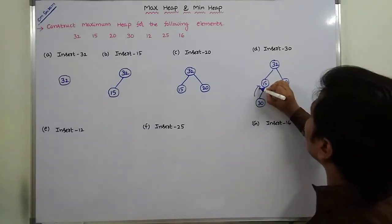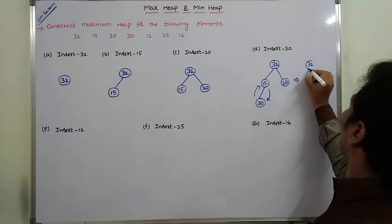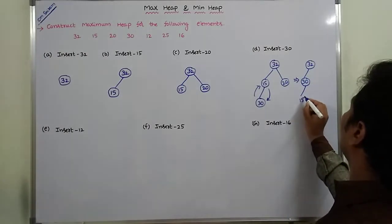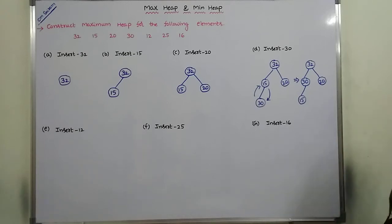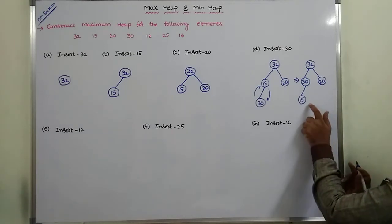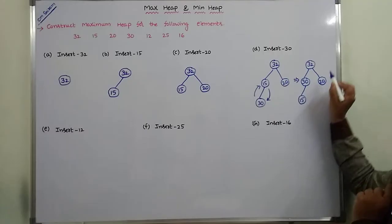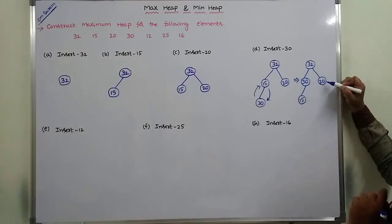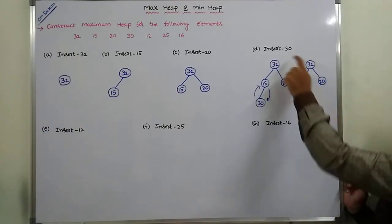After swapping, we get 32 at the root, 30 as its left child, 15 as 30's left child, and 32's right child is 20. Now check: 15's parent is 30, and 30 is greater than 15, so it satisfies the maximum heap property. Also, 30 and 20 have parent 32. 32 is greater than 30 and 32 is greater than 20. It satisfies the maximum heap property after inserting 30.